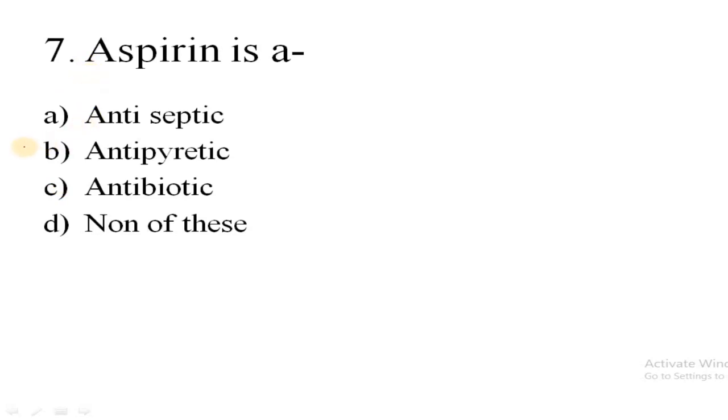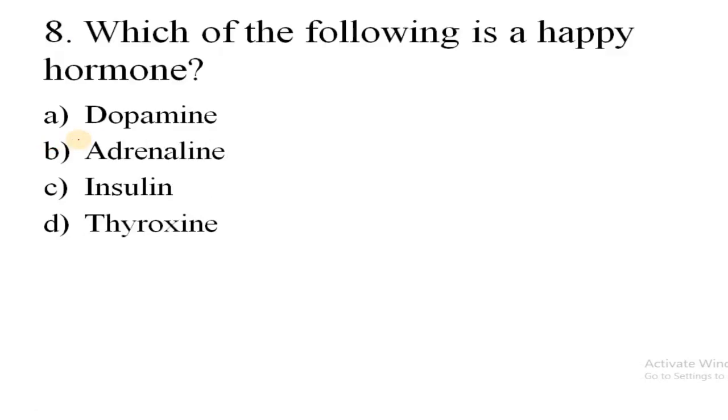Question number eight is, which of the following is a happy hormone? Means which hormone in our body makes us happy - due to the secretion of this hormone we feel happy. Here the correct answer is A, that is dopamine.